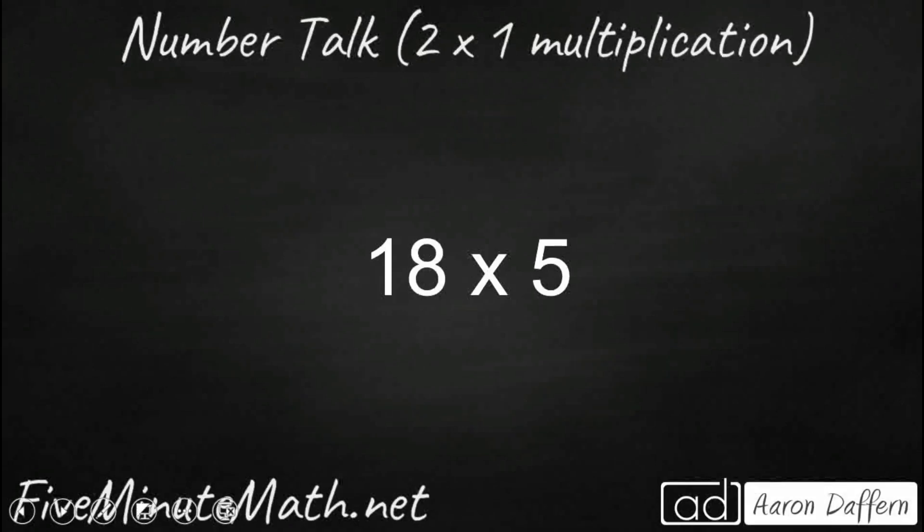Hello, and welcome to a number talk. Today we are looking at the two-digit by one-digit multiplication problem of 18 times 5. What we do in a number talk is you try to solve this expression in your head. We use mental math, which means no paper and pencil. So I'll give you a moment to pause the video, solve this problem, and also think about how you solved it, because I'm going to show you many different ways that you can find the answer to 18 times 5.